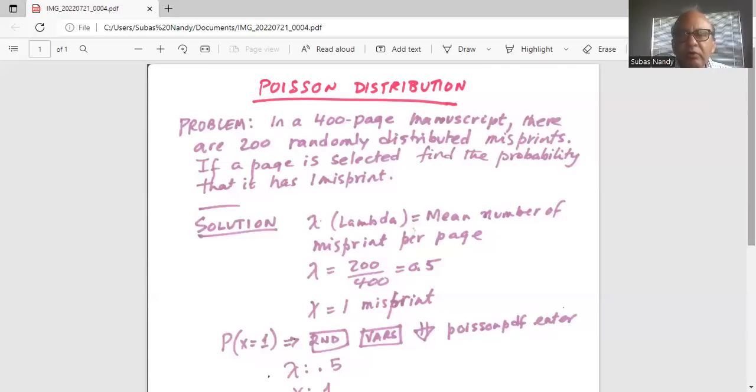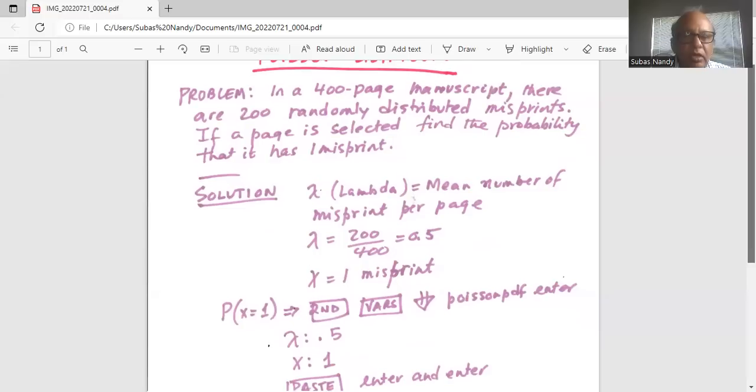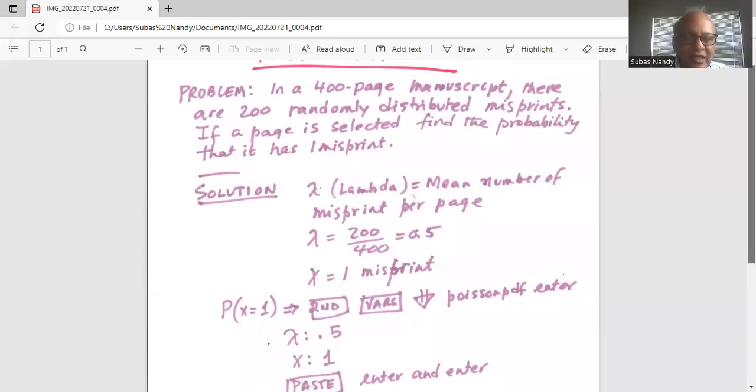And this is a Poisson distribution with the given characteristics lambda and we want to find probability of x equal to 1. So we go to press the second button, then the VARS button in the TI-84 calculator, then scroll down to Poisson PDF.